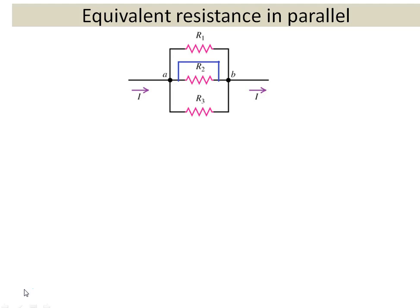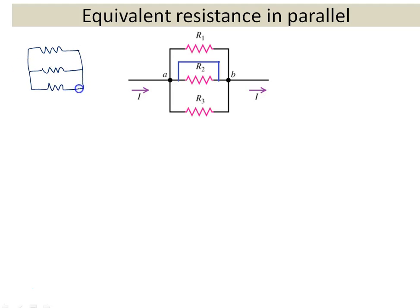Equivalent resistance in parallel. Let me revise what we have done in the last slide. There were three resistors exactly like this. We assumed the voltage difference is Va minus Vb, and current I is split into I1, I2, and I3 and finally summed up.